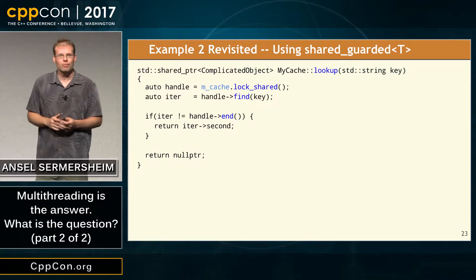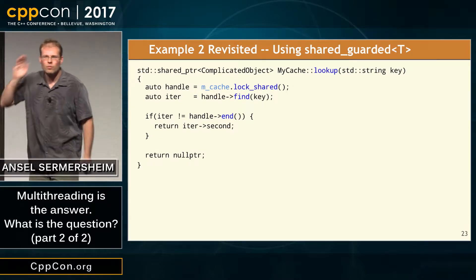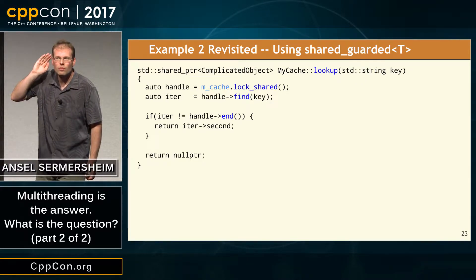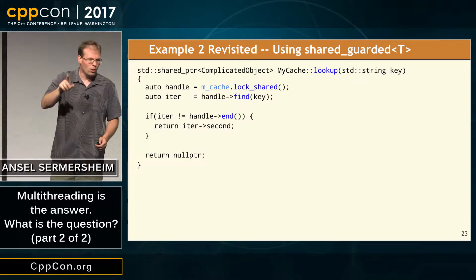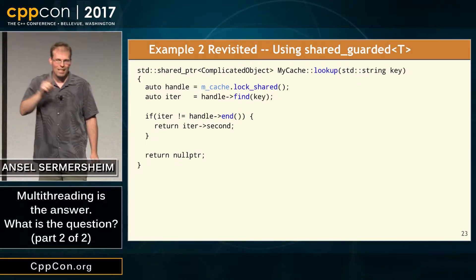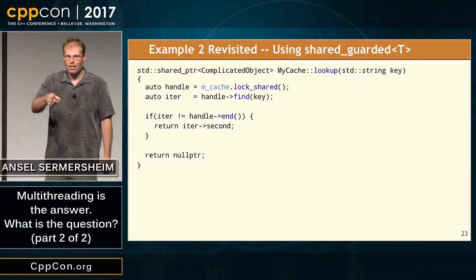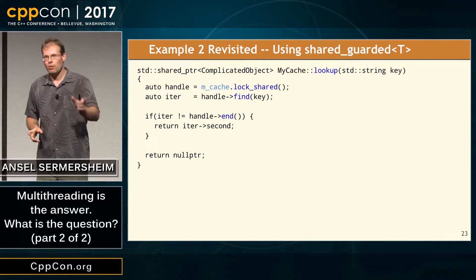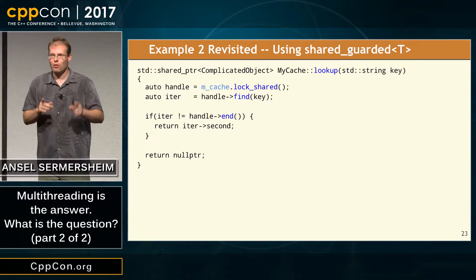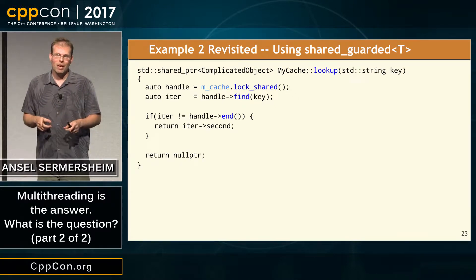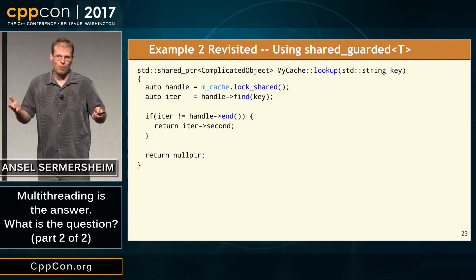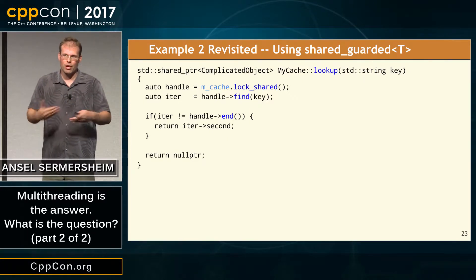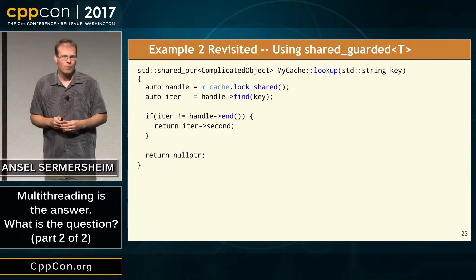Question: could I have put const on lookup and mutable on mutex? In this particular case, yes, that would have solved the problem. If I had made lookup a const method and made the mutex mutable, that would solve it. But it would not solve the problem in the general case, because you're assuming there's only one piece of data in that class and only one mutex, so the constness of the method mirrors the constness of the data. This approach is much more general.